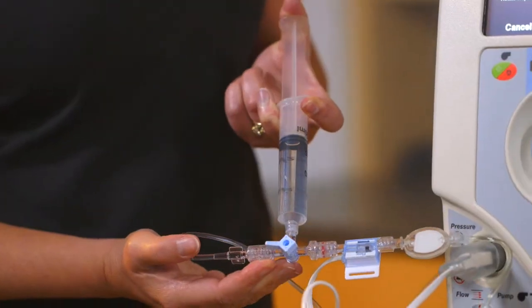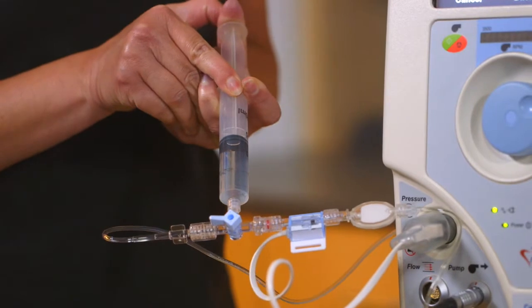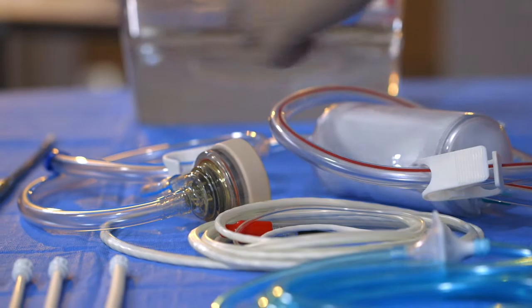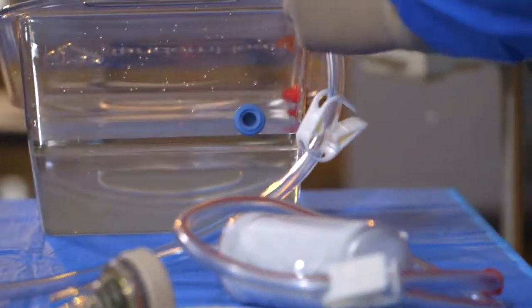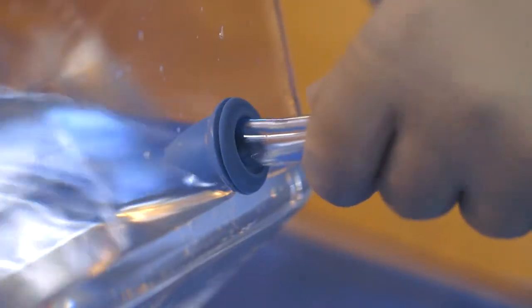Priming procedures must be followed carefully. Once it is confirmed that the lower housing is primed successfully and free of air, the sterile operator inserts the free end of the pump inflow tubing into the blue port of the priming basin.